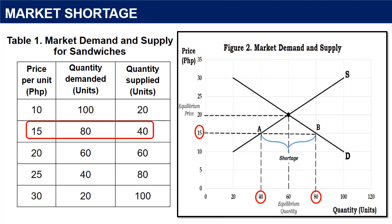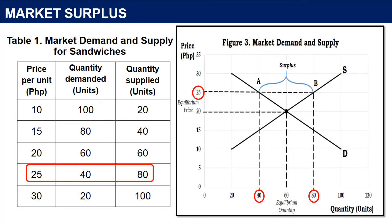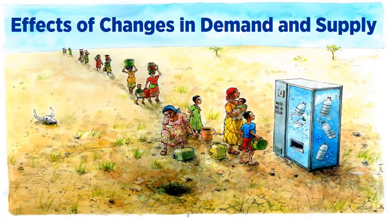Market surplus is a situation in which the quantity supplied is greater than quantity demanded — an excess in supply. If the price of the sandwich increases to 25 pesos, sellers are willing to produce 80 units (point B), while consumers plan to buy only 40 units. Sellers produce more while consumers buy less, resulting in a surplus of 40 units (QS - QD = 80 - 40). A positive sign implies surplus. Graphically, a surplus occurs at any price above the equilibrium point.